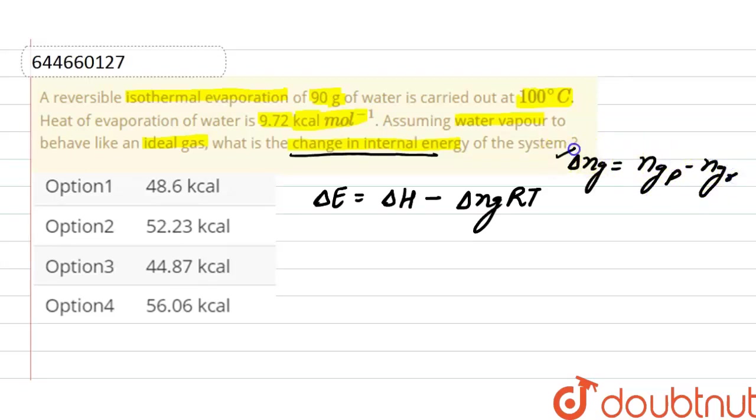This is the value when there is a reaction given, but there is no reaction given, only mass of water is given. So we will find out number of moles of water as number of moles equals mass divided by molar mass. Mass of water is 90 and molar mass of water is 18.